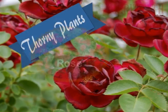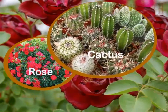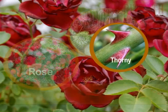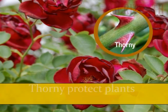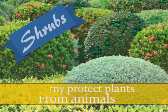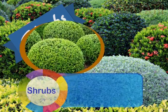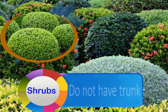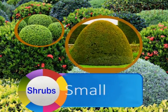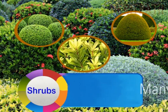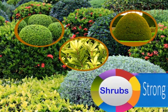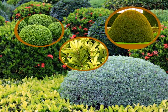Thorny plants: rose and cactus have sharp, pointed thorns. Thorns protect the plant from animals. Shrubs do not have a trunk; they are small plants with many thin and strong woody stems.